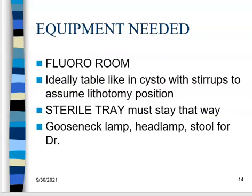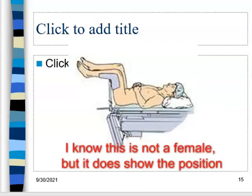Equipment needed includes a fluoroscopy room — or a C-arm works too. This is a sterile procedure, so everything must be set up on a sterile tray. The doctor needs sterile gloves, and if you're setting up in advance, be sure nothing gets contaminated. You'll also need a gooseneck lamp or headlamp, a stool for the doctor, and ideally a table with leg holders and stirrups for the patient — the lithotomy position.